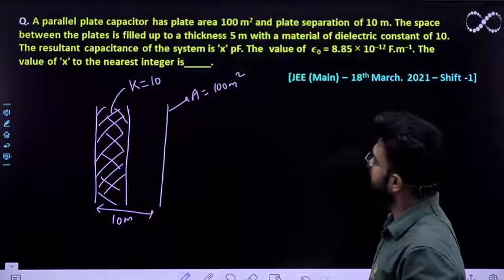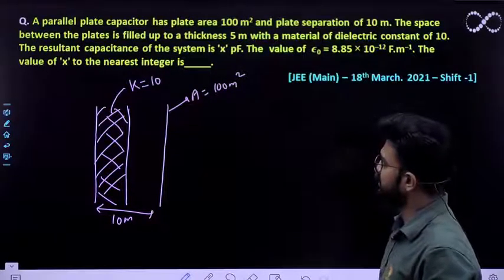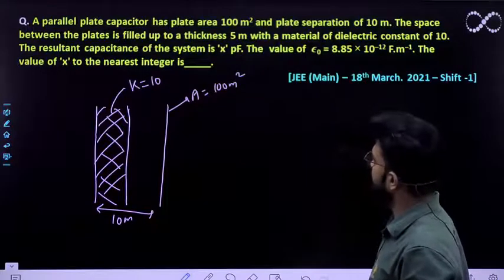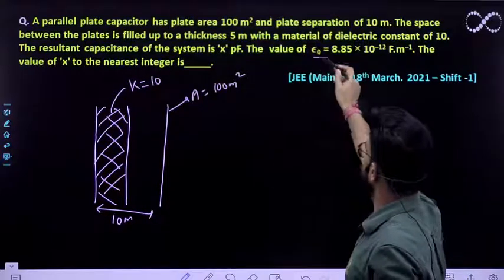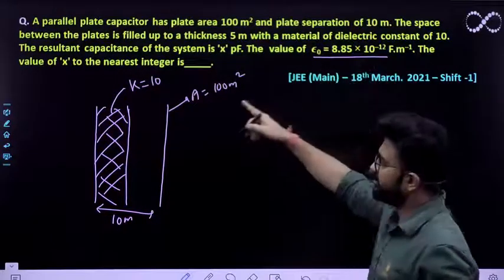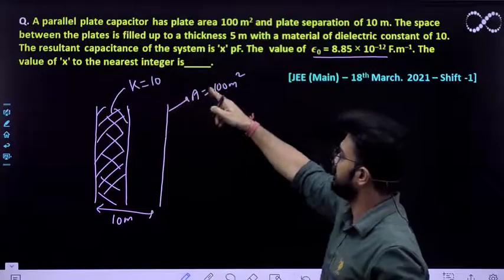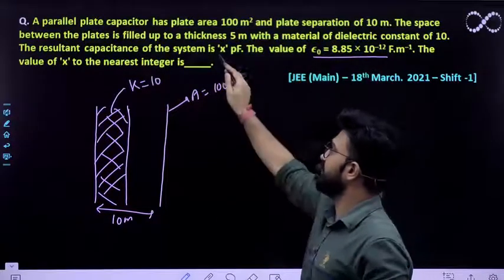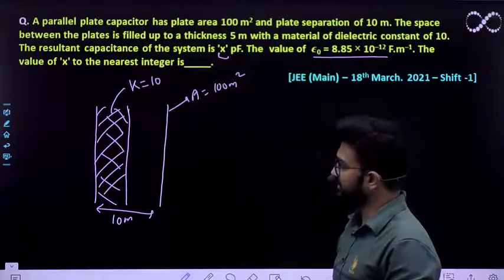So what we have to find out? The resultant capacitance of the system is x picofarad. So x picofarad value is also given to you and the value of x to the nearest integer is. So x ki value kya hogi to the nearest possible integer, that you need to find out.